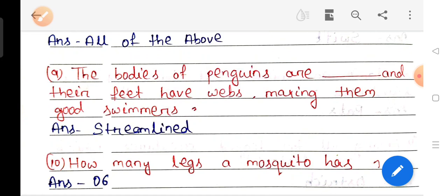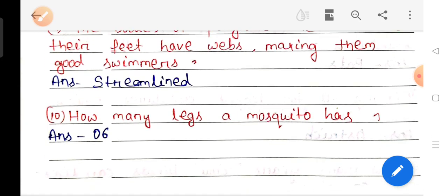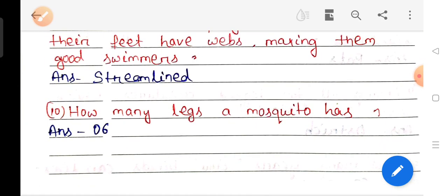Question number 9: The bodies of a penguin are fat. Their feet have webs making them good swimmers. Answer Streamlined. Question number 10: How many legs does a mosquito have? Answer 6.